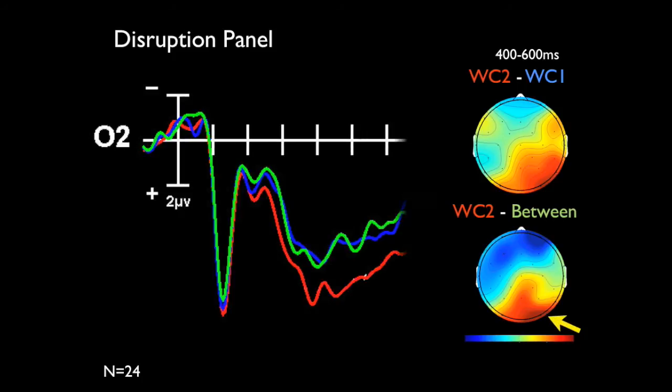Also, we found that disruptions in the second grouping elicited a larger P600 effect than either of the earlier disruptions. Both the left anterior negativity and the P600 are similar to those seen in neural responses to language and music.